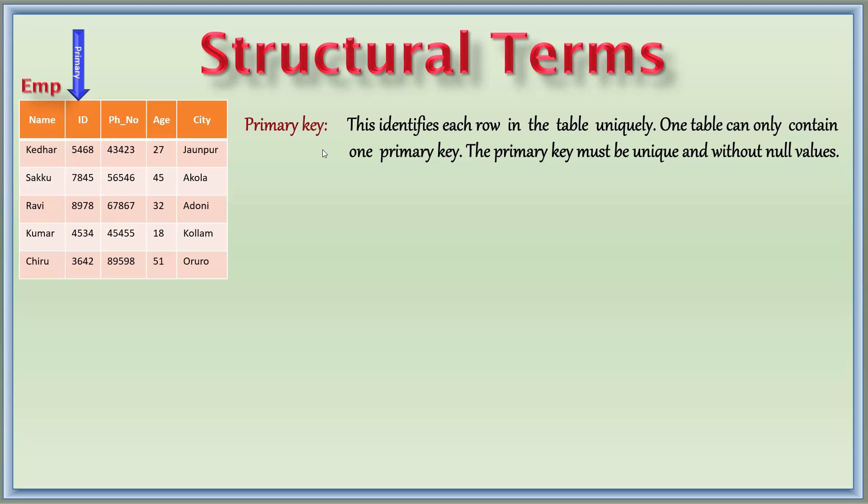So that cell cannot be empty. Even if you see the phone number, this also can be a primary key. Which are all eligible to become a primary key are called candidate keys. If you see in this table, both the columns are eligible to become a primary key. Then these are called candidate keys. The field which can serve as a primary key. But we have selected ID as the primary key here.